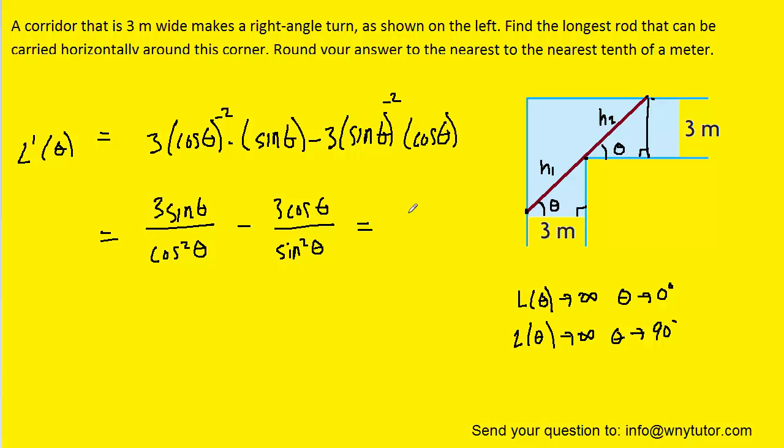Now, of course, in order to minimize this function, we have to set it equal to 0. Why don't we add this term over to the right-hand side? We have a factor of 3 on the left and right-hand side, so we can divide both sides by 3. We will then cross multiply, so that we have sine cubed of theta equaling the cosine cubed of theta. We'll divide both sides by cosine cubed, and then we'll use the identity that sine cubed over cos cubed is tan cubed.